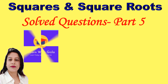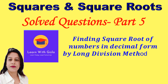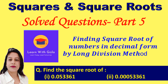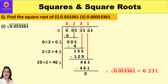Hello everyone, welcome to YouTube channel Learn with Gizla. In this video on squares and square roots, we shall be taking a question in which we have to find the square root of numbers which are in decimal form. We shall be using the long division method to solve such questions. The question is: find the square root of 0.053361 and 0.00053361.